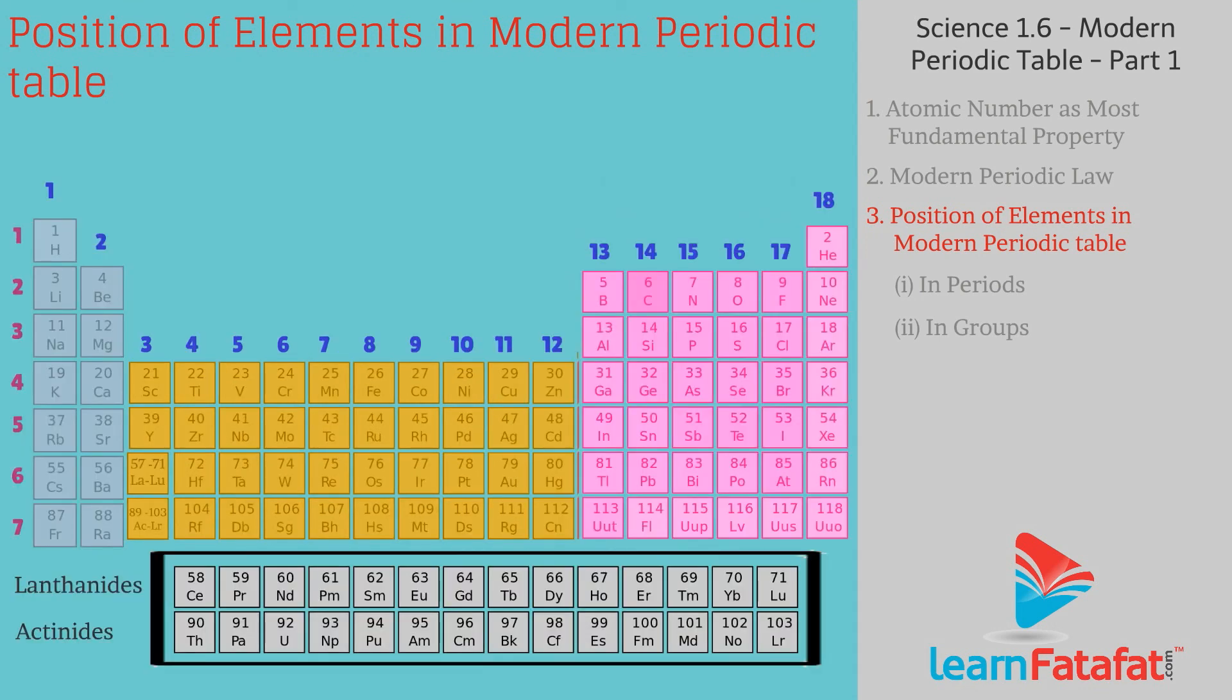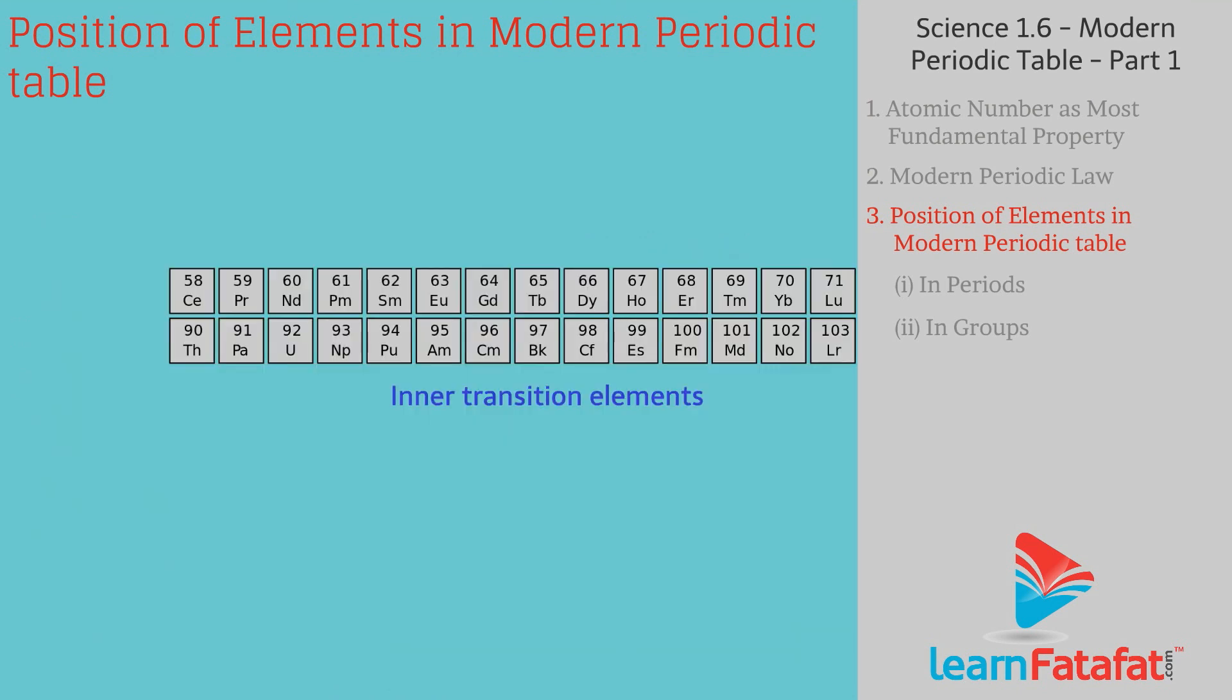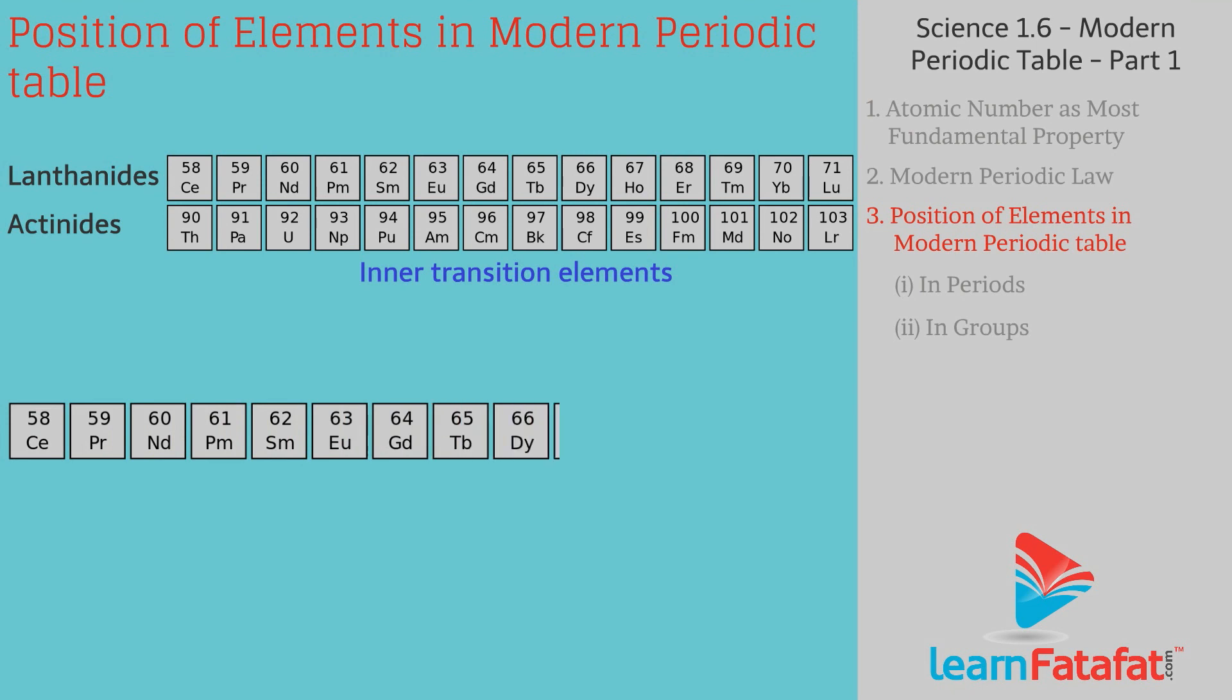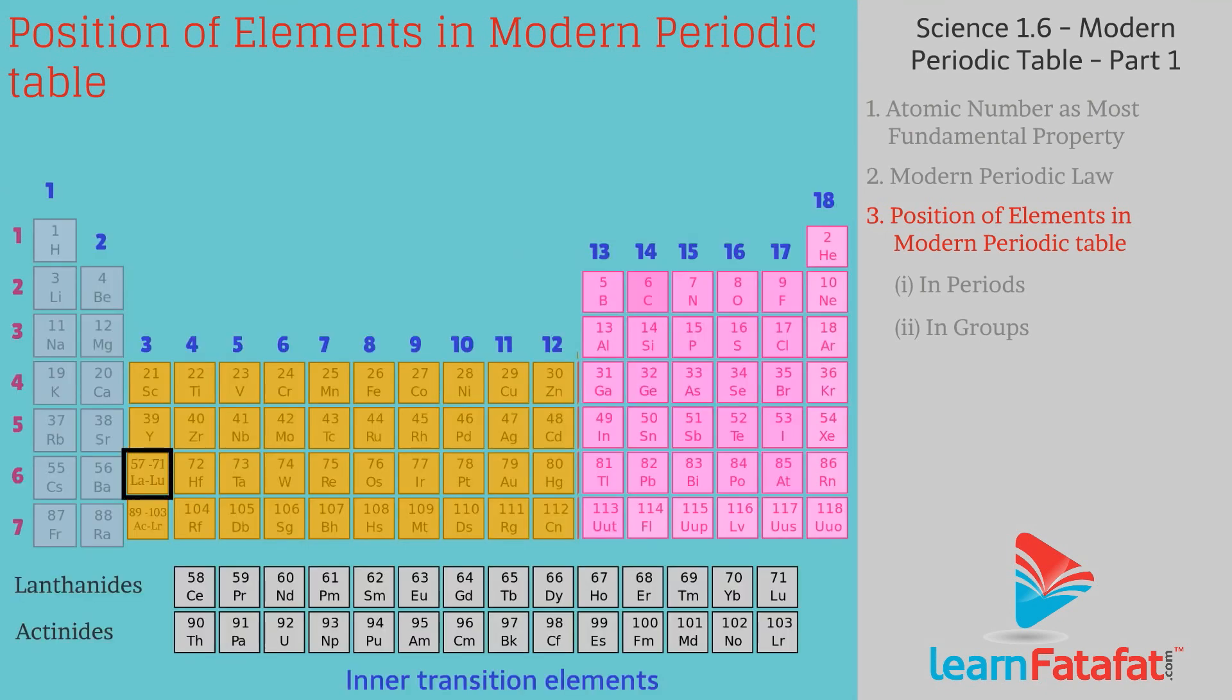Elements placed at bottom of the periodic table are called as inner transition elements. There are two series of these elements, lanthanides and actinides. Elements having atomic number between 58 to 71 are called lanthanides. Lanthanides series starts with lanthanum, which is placed in group 3 and period 6. It is placed in group 3 because of its similar properties with group 3 elements.